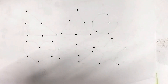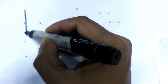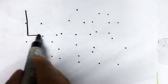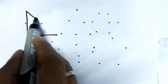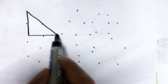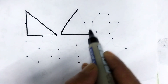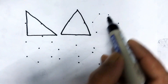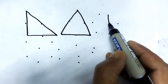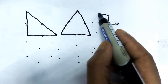Hello kids, how are you today? We will learn different types of shapes and different types of colors. Now I am adding the dotted lines and creating the shapes. This is a right triangle. This is a triangle.